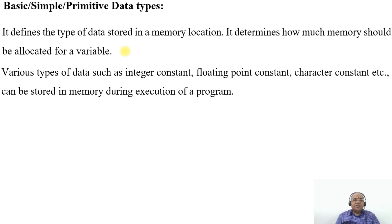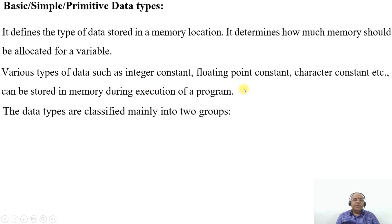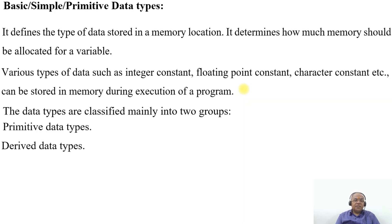Various types of data such as integer constant, floating point constant, character constant, etc. can be stored in memory location during execution of a program. The data types are classified mainly into two groups: one is primitive data types and the other one is derived data types.